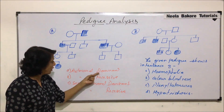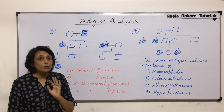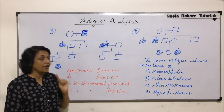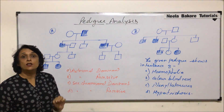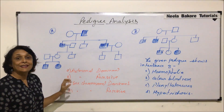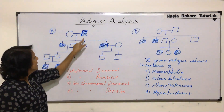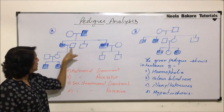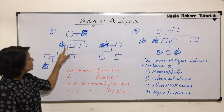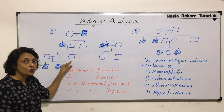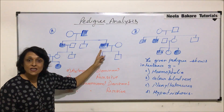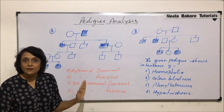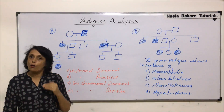When interpreting pedigrees, the first point to remember is: if a trait is seen in all generations, it is likely a dominant trait. Here, the parent generation shows it, but in the next generation one son is not showing it, and the children of the daughter and son in the next generation are also not showing the disease.